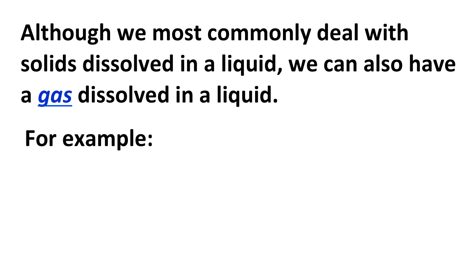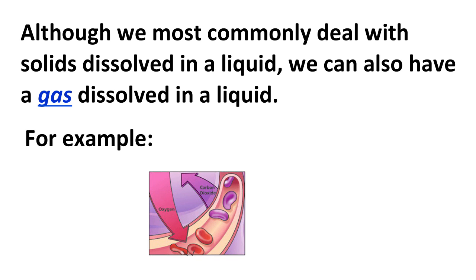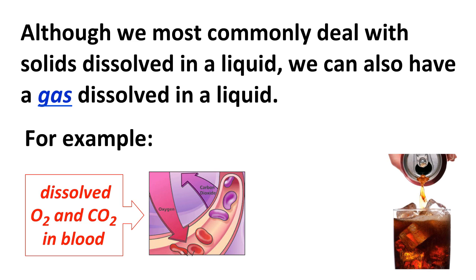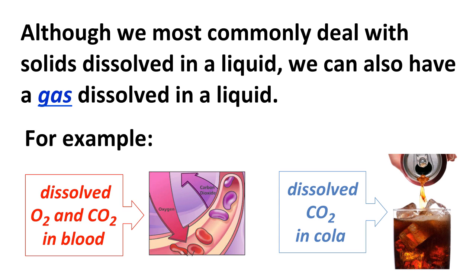Some examples of why this might be important: oxygen dissolves in blood and is carried throughout your body to places where it's needed. Carbon dioxide that's produced is also carried through blood and is therefore able to be removed from the body. Dissolved oxygen and carbon dioxide in blood are critical for life. A perhaps more prosaic but tasty example — the carbonation in cola or beer is dissolved carbon dioxide, and that provides a little tang that we tend to enjoy.